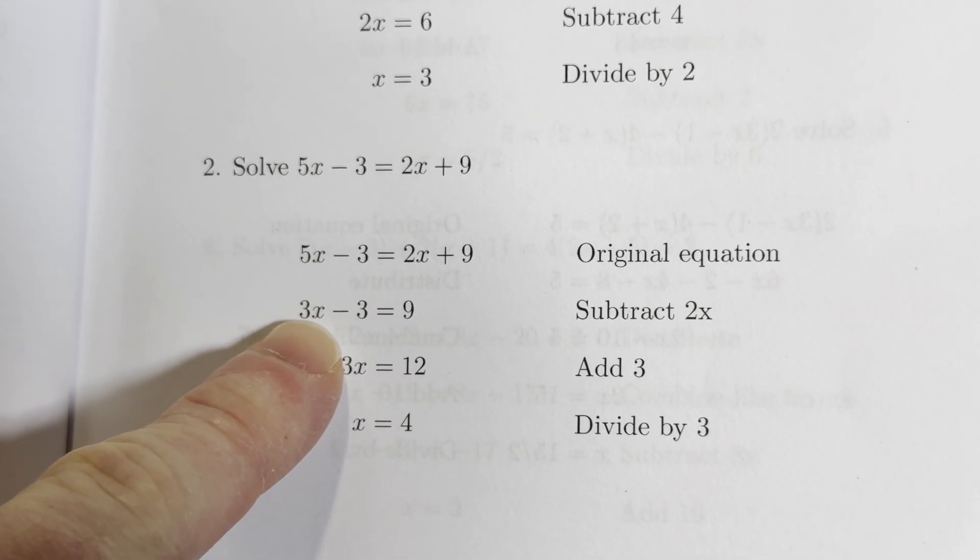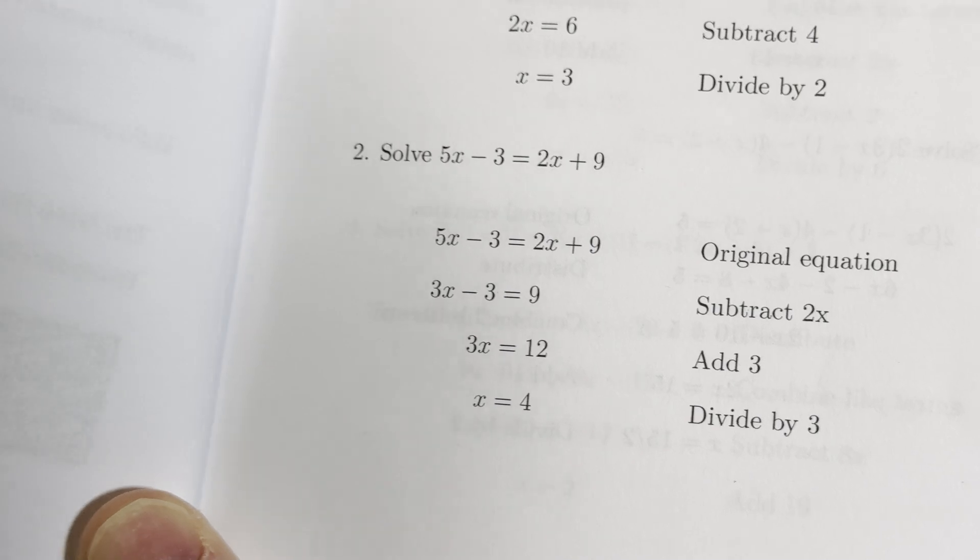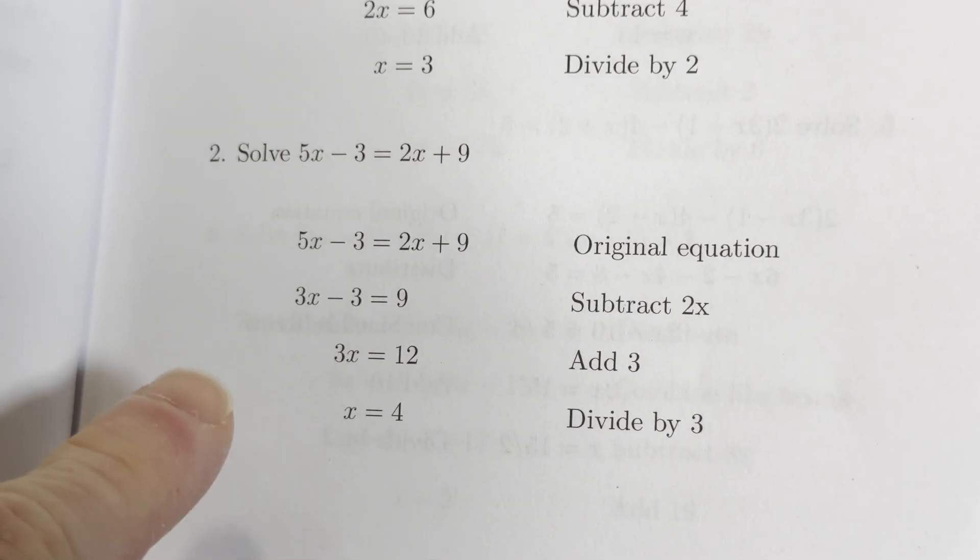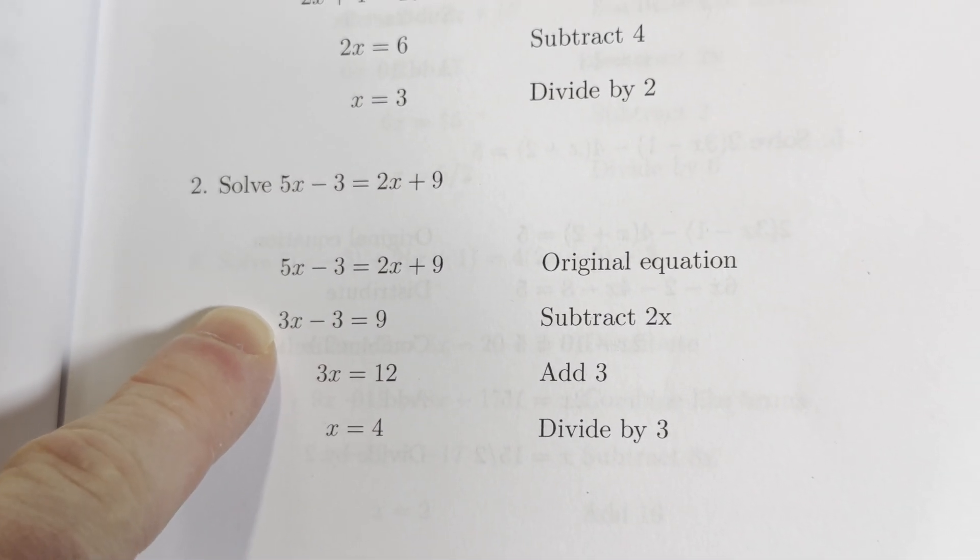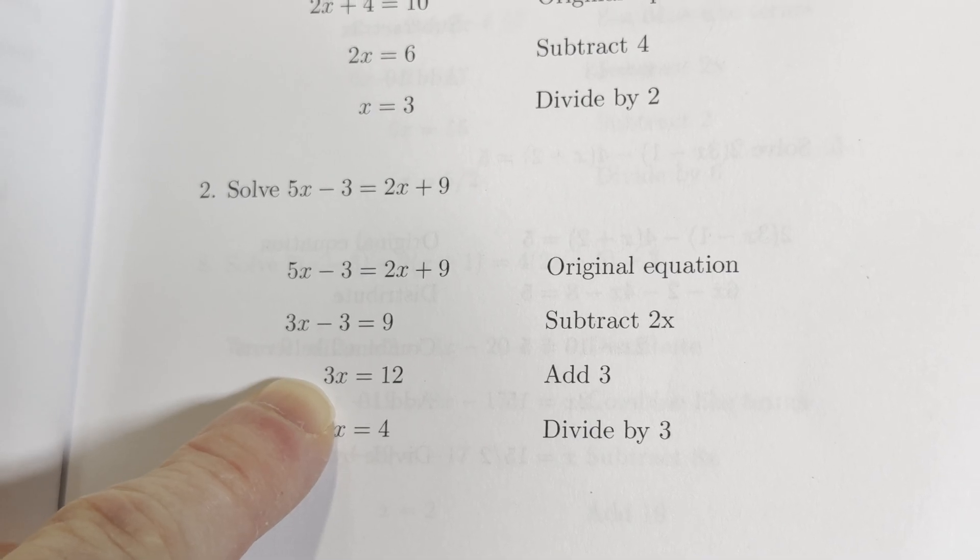And we started by subtracting 2x from both sides. Oh, looks like I did it. I don't want to say they. I wrote the book. It's different when it's your book. Well, it looks like they, the authors, or the author, did it this way. Yeah, same thing we did. Pretty cool.